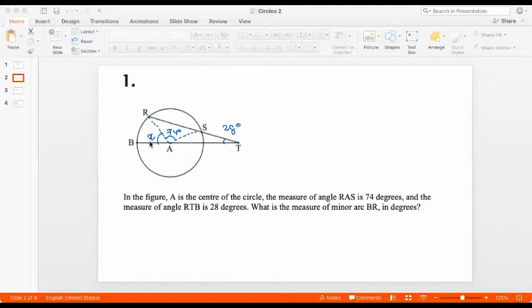The interesting thing is that we notice that AR and AS are the radii, right? AR is equal to AS and that's the radius of the circle. So angle ARS and angle ASR need to be equal. And since they together with 74 are the angles in a triangle, we can say let angle ARS and ASR be Y. So 2Y plus 74 is equal to 180.